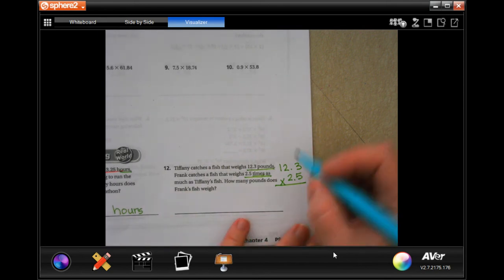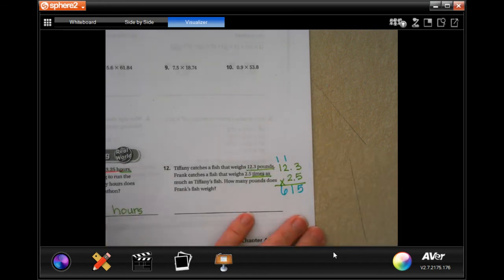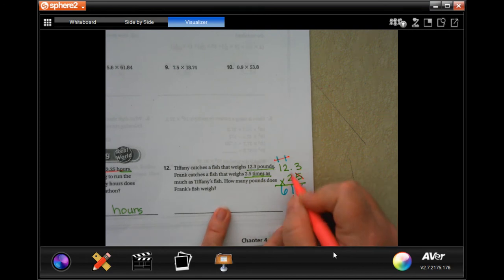Five times three is fifteen, carry our one. Five times two is ten, plus one is eleven, carry your one. Five times one is five, plus one is six. So two times three is six, two times two is four, and two times one is two.